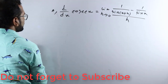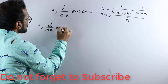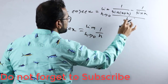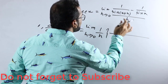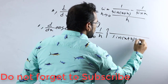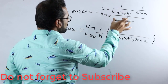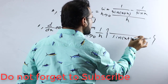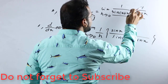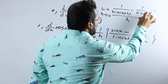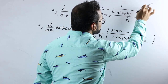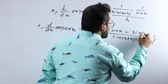After that, d/dx of cosec x equals limit h tends to 0, one divided by h. Taking the LCM of sin(x+h) and sin x, which is sin(x+h)·sin x: we get sin x minus sin(x+h), all over sin(x+h)·sin x, divided by h.